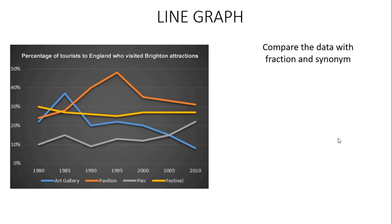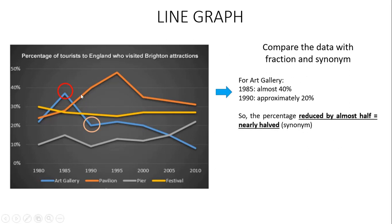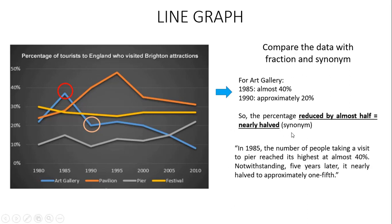We can also compare the data with fractions and synonyms. For example, for art gallery in 1985, the percentage was almost 40%, and in 1990 the percentage was approximately 20%. So the percentage reduced by almost half — or nearly half. In our essay, we can write: in 1985, the number of people taking a visit to the art gallery reached its highest at almost 40%. Notwithstanding, five years later — that's a synonym for 1990 — it nearly halved to approximately one-fifth.